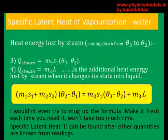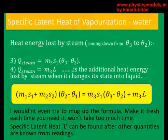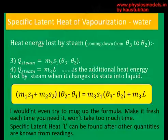The mass of steam, m3, is found by calculating the final mass of water in the calorimeter minus the initial mass of water in the calorimeter; subtracting the two gives the additional mass, which is the mass of steam that condensed into the water. The additional heat energy lost by steam is that mass of steam times the latent heat L — that's where L comes in.